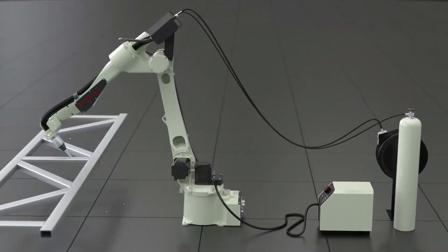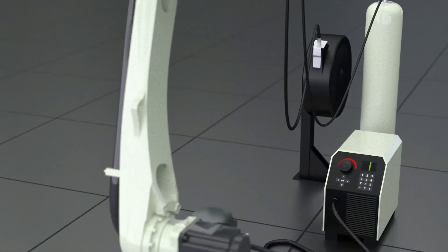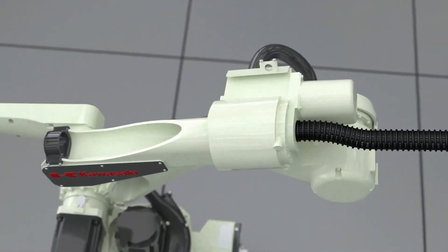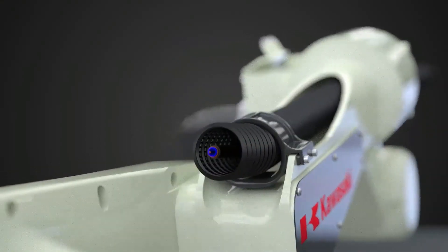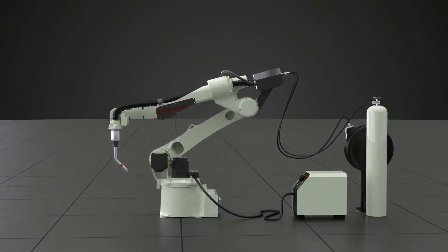The BA-6L has been designed to work smoothly with a number of industry-leading welding equipment. Its hollow wrist design allows for easy management of cables and hoses around the torch, providing stable wire feeding and reliable offline teaching.